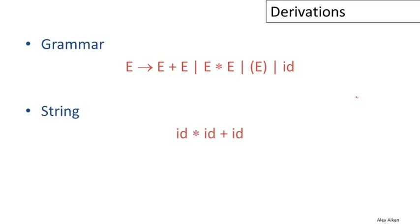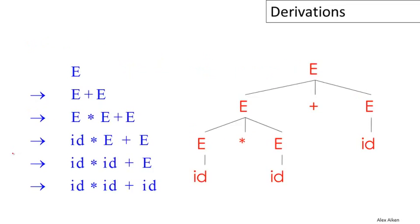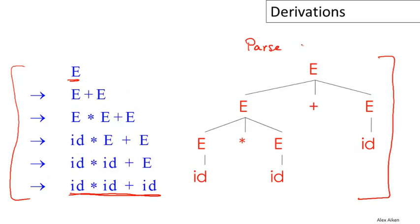What we're going to do now is parse this string and show how to produce a derivation for the string, and also at the same time build a tree. Here is a derivation beginning at E and ending in the string that we're interested in, with one production applied each step along the way. And here is the corresponding tree, which is called a parse tree.